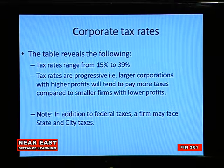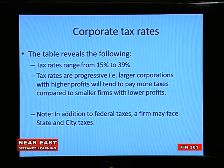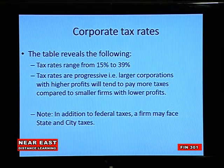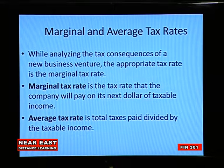For example, if net income is from zero to fifty thousand dollars, the marginal tax rate will be 15%. If income is from fifty thousand one dollar to seventy-five thousand dollars, it will be 25%. That means the marginal tax rate is progressive — if the company achieves high net income, the marginal tax rate will be high. The table includes rates ranging from 15% to 39%. Large corporations with high profits will tend to pay more taxes compared to smaller firms with lower profits.